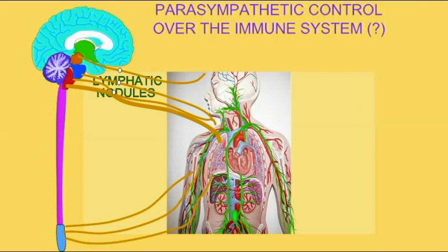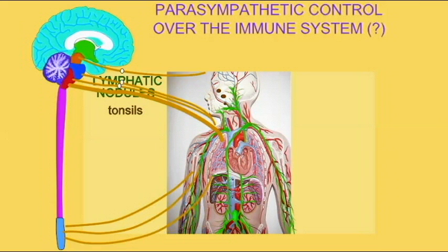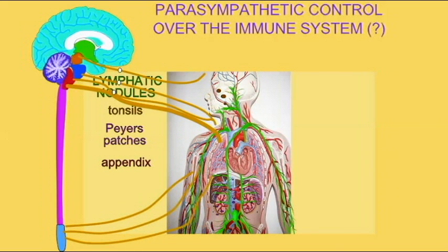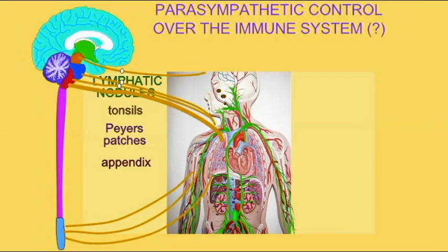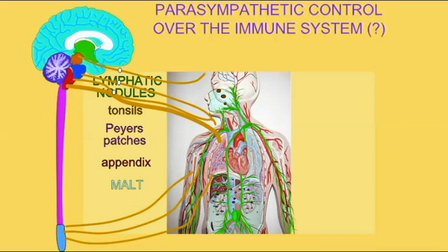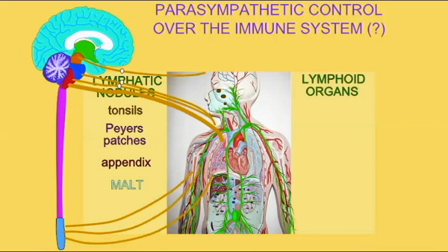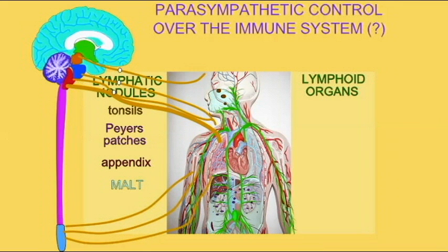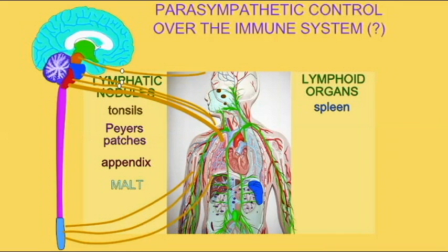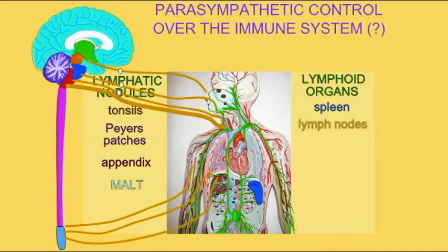In general, it has been concluded that there is no direct innervation of lymphatic tissues by the parasympathetic division of the ANS. There may be some parasympathetic influence over immunity in that some afferents of the parasympathetic division, such as the vagus nerve, travel to regions of the brain which determine the sympathetic control over the immune system.